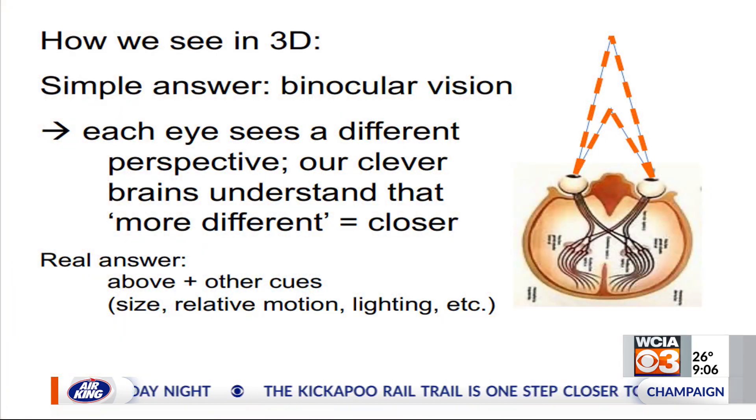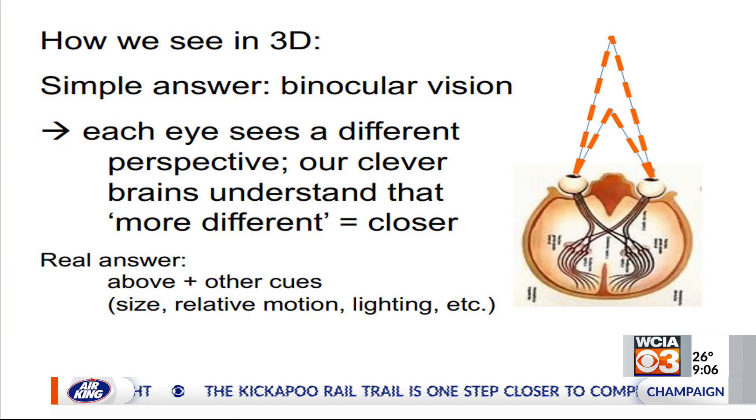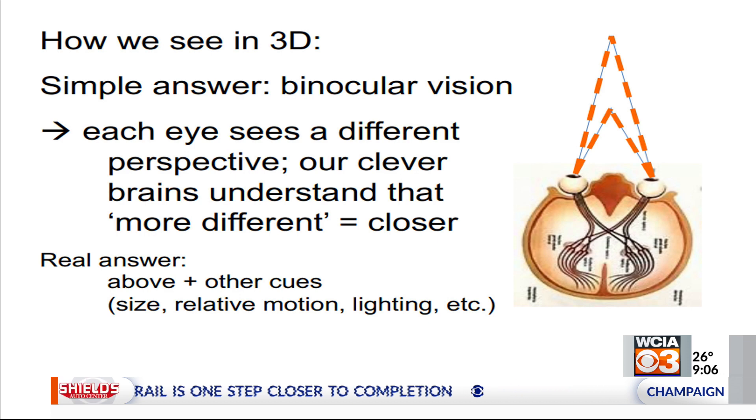If you just hold up your thumb and look at something distant, the closer your thumb is to your eye, the bigger and more different those images will look. There's a graphic that shows that our brains interpret a more different image to mean that something is closer. So if we want to fake that in a 3D movie, we only have a two-dimensional image but we want our brains to think something is three-dimensional, so we need to send different images to the two different eyes.